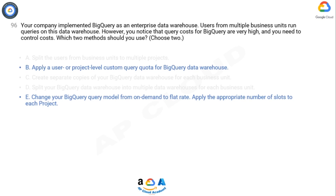For option E, changing your BigQuery query model from on-demand to flat rate provides better cost control. With the flat rate model, you pay a fixed monthly fee for a specific number of slots. By allocating the appropriate number of slots to each project based on their usage requirements, you can effectively manage costs and ensure that resources are allocated optimally.